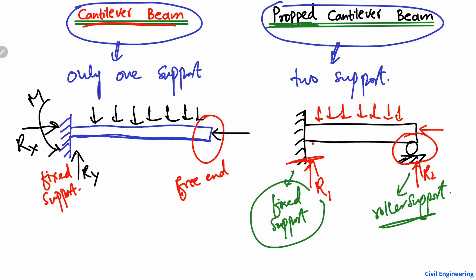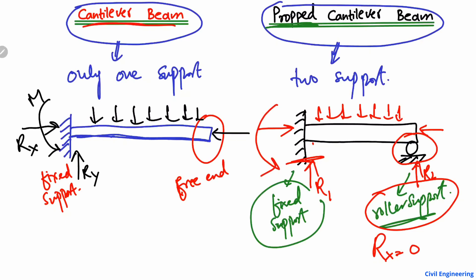When a horizontal load is acting on the beam, it will only be taken by the fixed support, because a roller support cannot take any horizontal load — Rx equals zero in this case. Similarly, the moment can only be resisted by the fixed support, because the roller support cannot take any moment — it is zero at the roller support. So the major difference is that the vertical load acting on this beam is distributed into two parts.